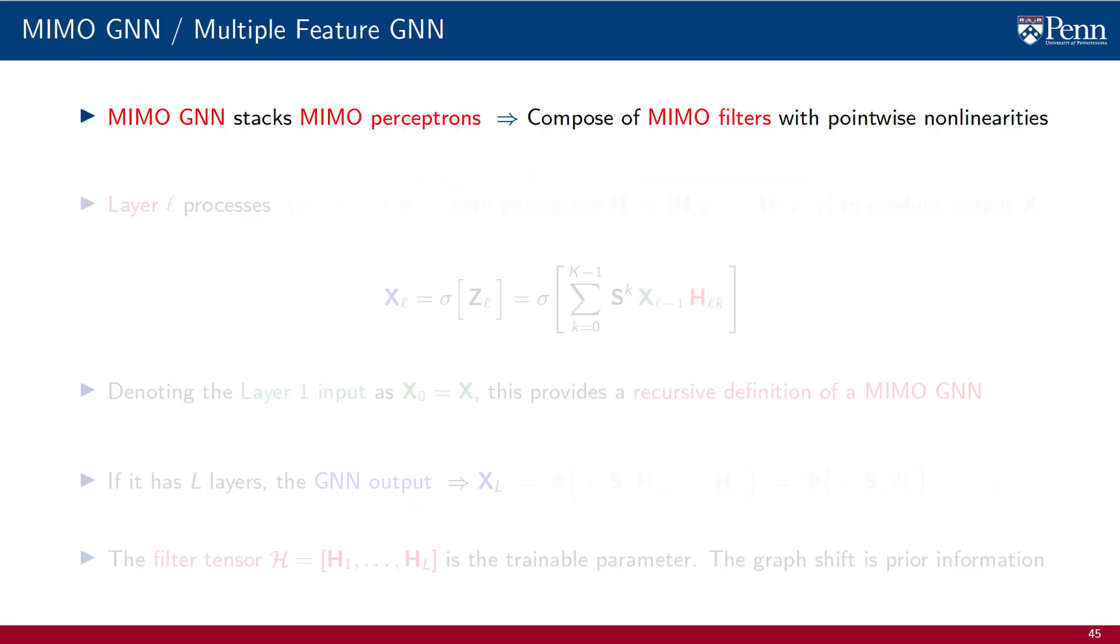In a story that should by now sound very familiar, we can build a MIMO GNN by stacking MIMO perceptrons. MIMO perceptrons which, in turn, we build by composing MIMO filters with point-wise nonlinearities. The procedure is the same we used to build a GNN out of a single input, single output graph filters.